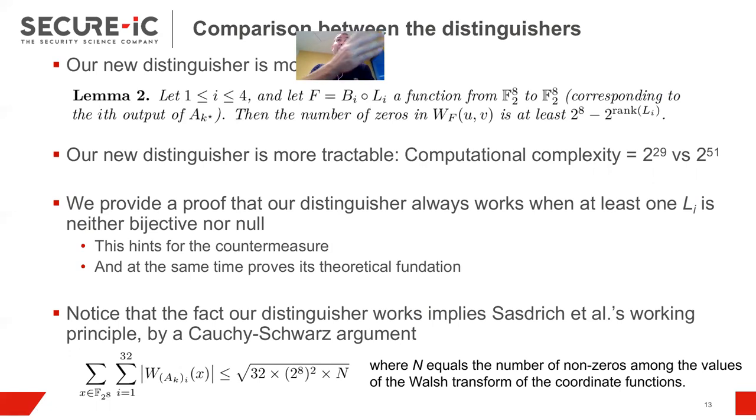But assume it is less owing to the property that our mu function is not, I mean, only a subspace of it in the input is sent. Then, in this case, the number of zeros is growing, actually. So, we have, by the way, a distinguisher, which is more tractable as well, and we will provide proof that it works. And this proof is useful because it will give us a hint for the countermeasure.